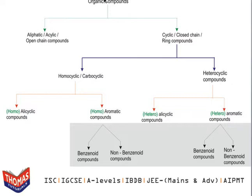Organic compounds are classified into two types. First is aliphatic, which are straight chain or open chain compounds. These compounds are joined to form an open carbon chain — their ends are open — and are also called acyclic or open chain compounds. Their structures may be branched or straight chain, such as butane or pentane. They all come under aliphatic.